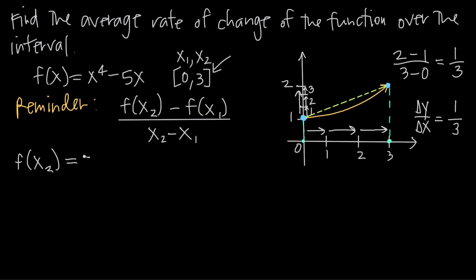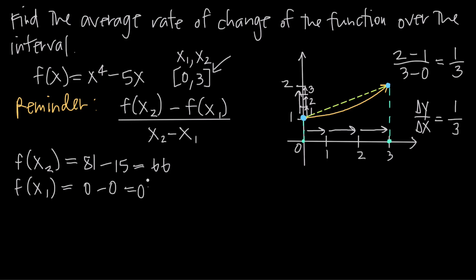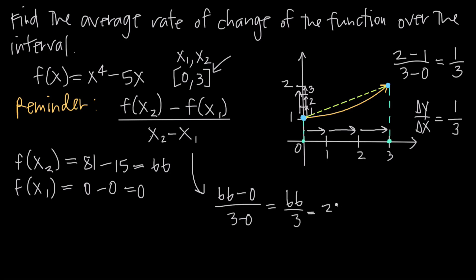So f of x sub 2, which is f of 3, gives us 3 to the 4th minus 5 times 3. 3 to the 4th is 81, and minus 5 times 3 is minus 15, giving us 66. Then f of x sub 1, which is f of 0: 0 to the 4th is 0, 5 times 0 is 0, so f of 0 equals 0. Plugging into the formula: 66 minus 0 in the numerator, and 3 minus 0 in the denominator, gives us 66 over 3, which equals 22.